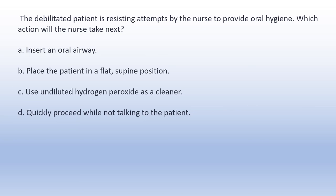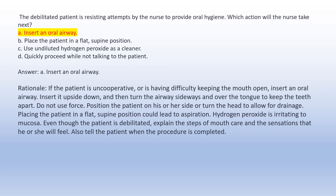The debilitated patient is resisting attempts by the nurse to provide oral hygiene. Which action will the nurse take next? A. Insert an oral airway. B. Place the patient in a flat, supine position. C. Use undiluted hydrogen peroxide as a cleaner. D. Quickly proceed while not talking to the patient. Answer A: Insert an oral airway. Rationale: If the patient is uncooperative or having difficulty keeping the mouth open, insert an oral airway upside down, then turn it sideways and over the tongue to keep the teeth apart. Position the patient on his or her side or turn the head to allow for drainage. Supine position could lead to aspiration. Hydrogen peroxide is irritating to mucosa. Explain the steps of mouth care and inform the patient when the procedure is completed.